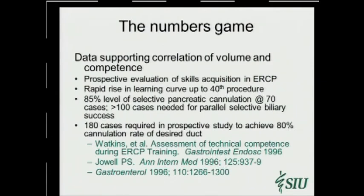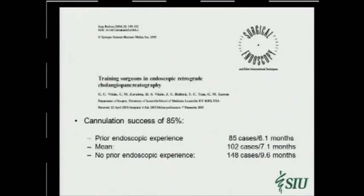In the gastroenterologic literature on ERCP, studies suggest that to reach an 85% cannulation rate of the desired duct—what wouldn't even be considered a fully accepted level of competence today—somewhere between over 100 to up to 180 cases were required. Again, you can see where some of the published numbers are coming from.